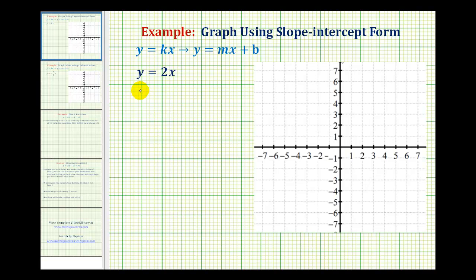We want to graph the direct variation equation y equals 2x. The general direct variation equation y equals k times x should remind us of slope intercept form with the form y equals mx plus b.